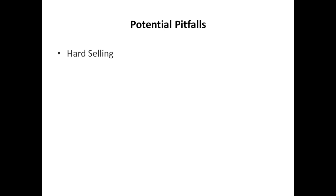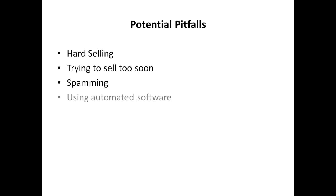There are, however, some pitfalls. Hard selling — nobody likes the hard sell. Trying to sell too soon — some people make the mistake of selling with their first contacts through social media marketing. And spamming, which is also a major problem with social media marketing. Linked to spamming is the use of automated software. While using automated software can be advantageous at times, it can also create large amounts of spam and put people off having contact with you or your company or your business.